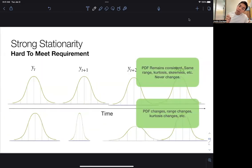But if you look at the row at the bottom, the PDF changes, which means that the range changes, other things change, kurtosis changes, et cetera. Meaning the potential value of a particular economic variable is no longer constant throughout time. It varies throughout time.